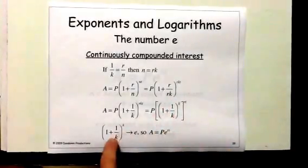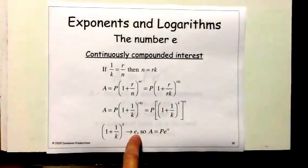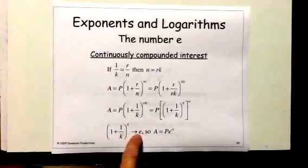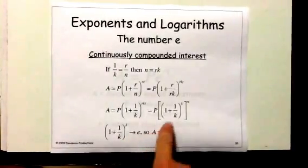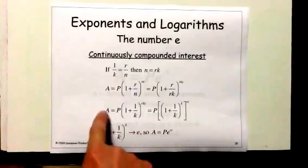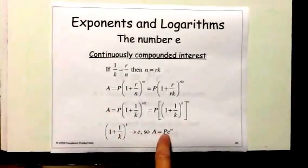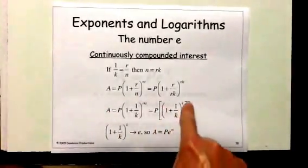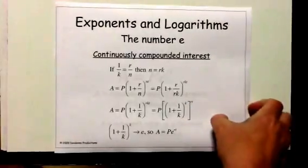This expression approaches e as K gets very large, so this expression right here is our compound interest formula. A is equal to P times e to the RT power. That's our formula for compound interest.